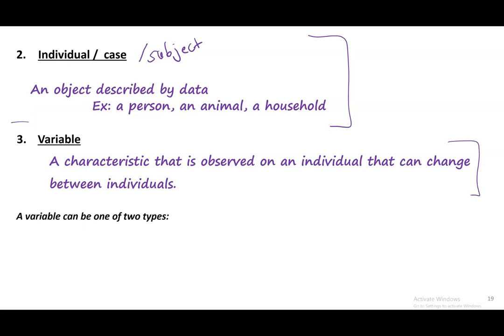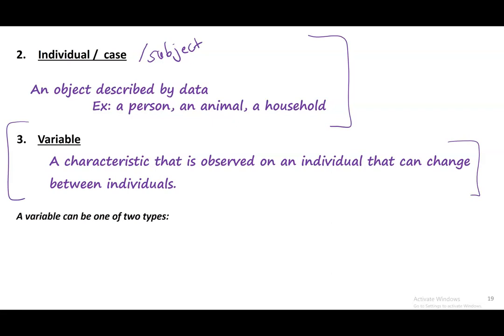There are two common types of variables. The first is a categorical variable — it places individuals into one of several groups or categories. For example, from the syllabus quiz: do you prefer hot weather or cold weather? They can pick one or the other — those are categories. You could also ask what political party someone is registered with, and there are a whole lot of categories: the two big ones, independent, and all the others. It totally depends on how you group it.